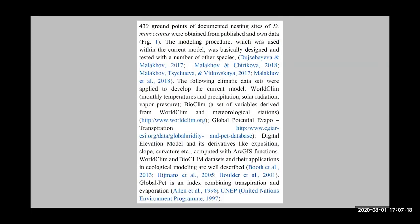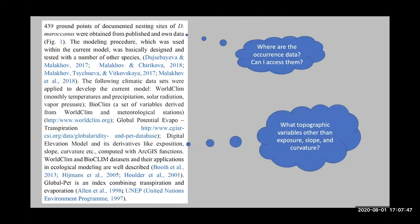If evaluation data were set aside within MaxEnt, what proportion was set aside? Another example: 'Ground points of documented nesting sites were obtained from published and own data; climatic data were grabbed,' etc. Where are the occurrence data — do I have access to them? Regarding topographic data, it mentions 'its derivatives like exposition, slope, curvature, etc.' — what other variables were used? I can't replicate the use of a variable that's not even named.